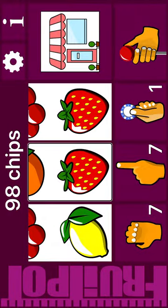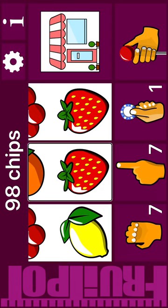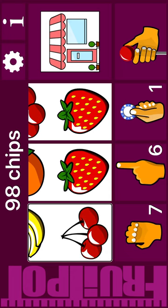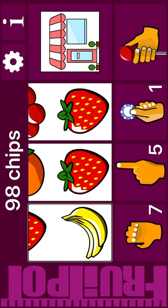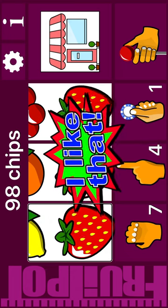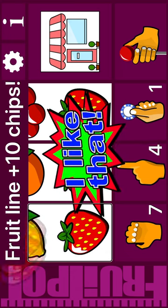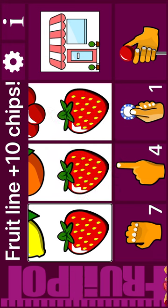Bet. Reel 1: Lemon. Next: cherry. Reel 2. Reel 1. Nudge. Cherry. Banana. Strawberry. Fruit line plus 10 chips.